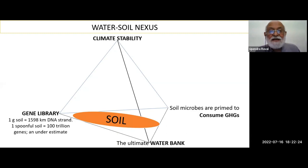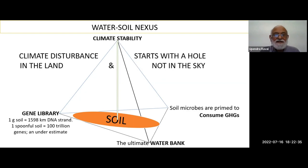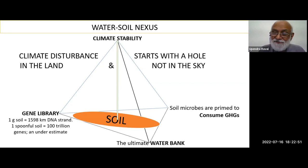So this is where the soil and climate axis is established. Climate disturbance starts with a hole in the land and not in the sky. If we want to think of climate stability, we'll have to stop using tube wells for water extraction and throwing water inside the belly of the earth.